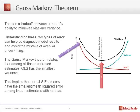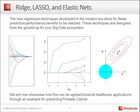What this implies is that our OLS estimates have the smallest mean squared error among linear estimators with no bias. But then that begs the question: what if I introduce bias to the model — could I achieve a model that has higher predictive performance? This idea has basically created an entire new class of predictions. You might be able to get better predictions at the expense of having higher variance, and this is really the foundation of these advanced regression techniques.